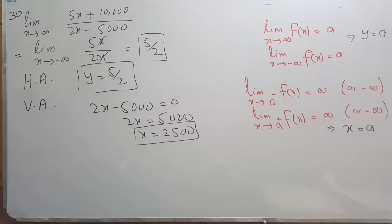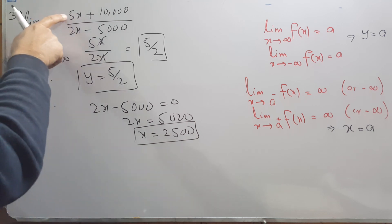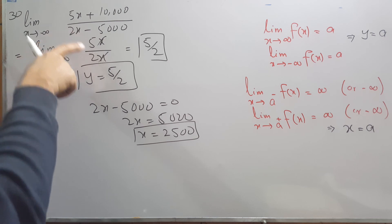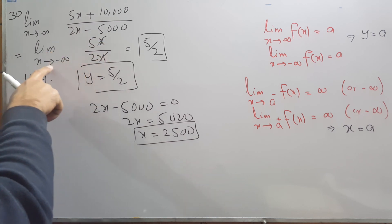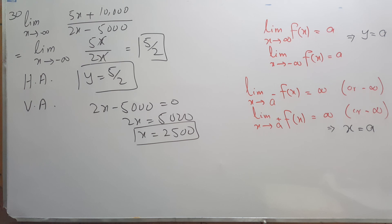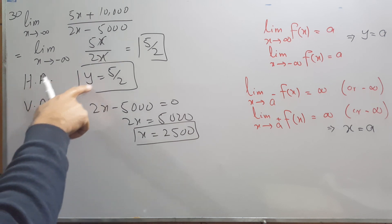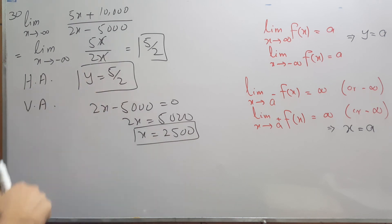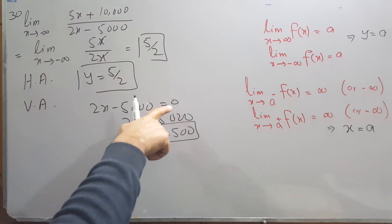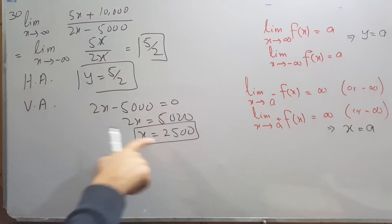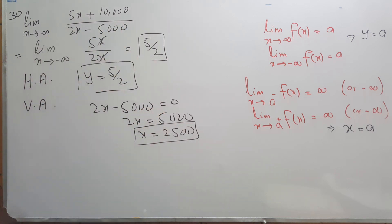This next problem is exactly the same type. We have (5x + 10000)/(2x - 5000). Taking the highest power terms, 5x over 2x: x cancels, leaving 5/2. So the horizontal asymptote is y = 5/2. For the vertical asymptote, we set the denominator equal to zero and solve to find the vertical asymptote.